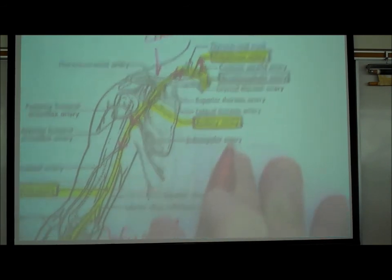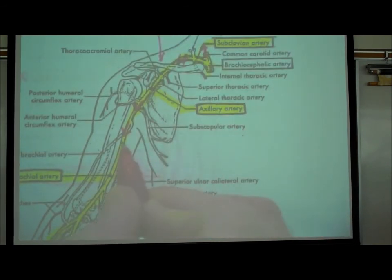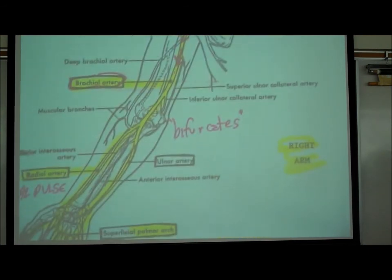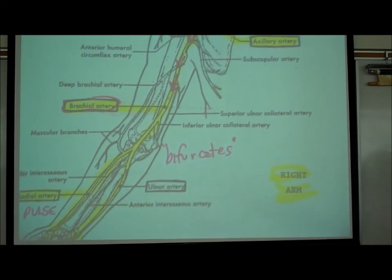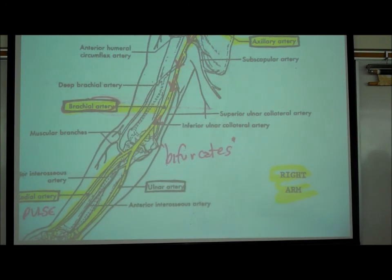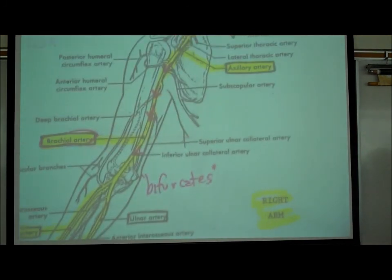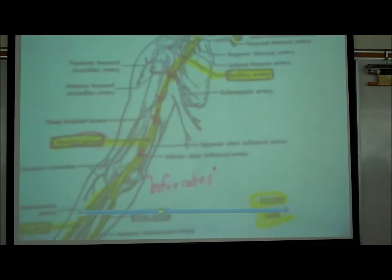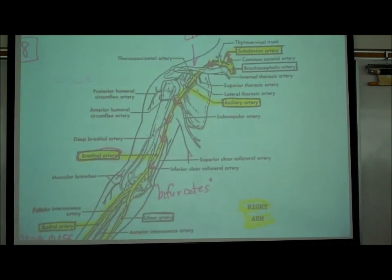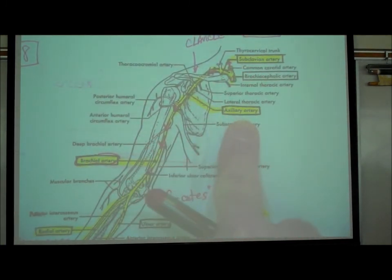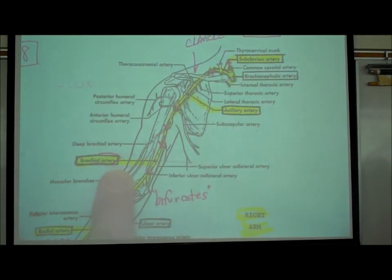When the blood reaches around the middle of the upper arm, the artery's name changes again and it's called the brachial artery. It seems strange that the name keeps changing — from subclavian to axillary to brachial.